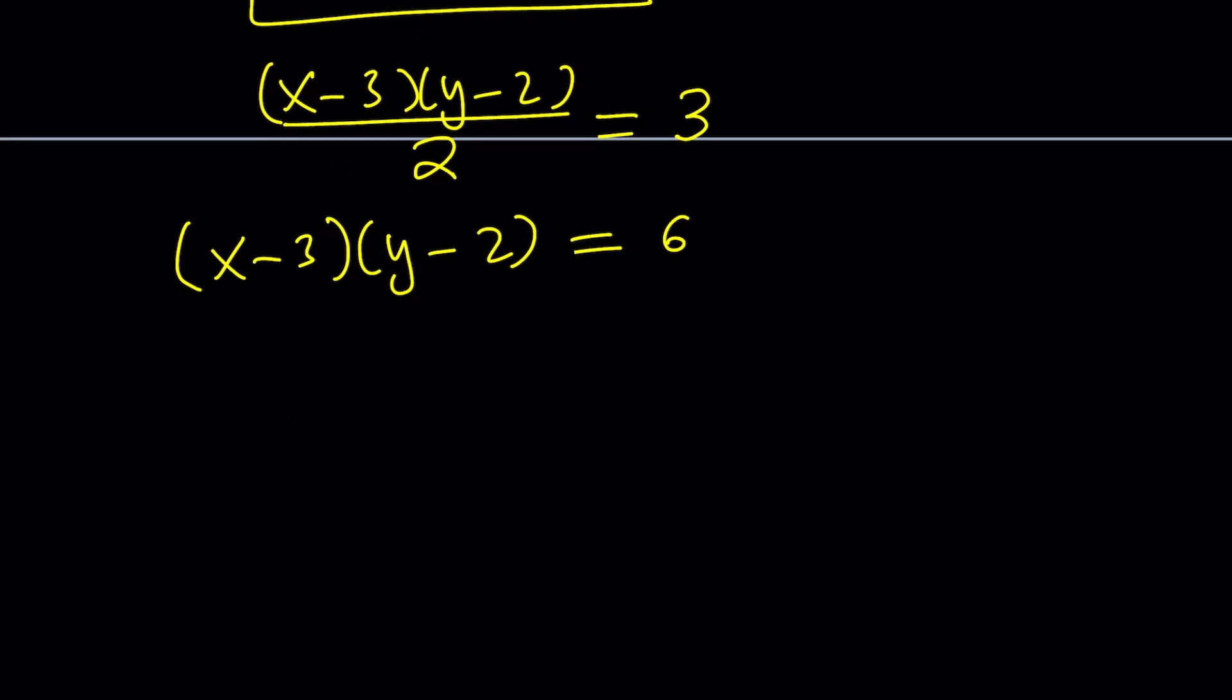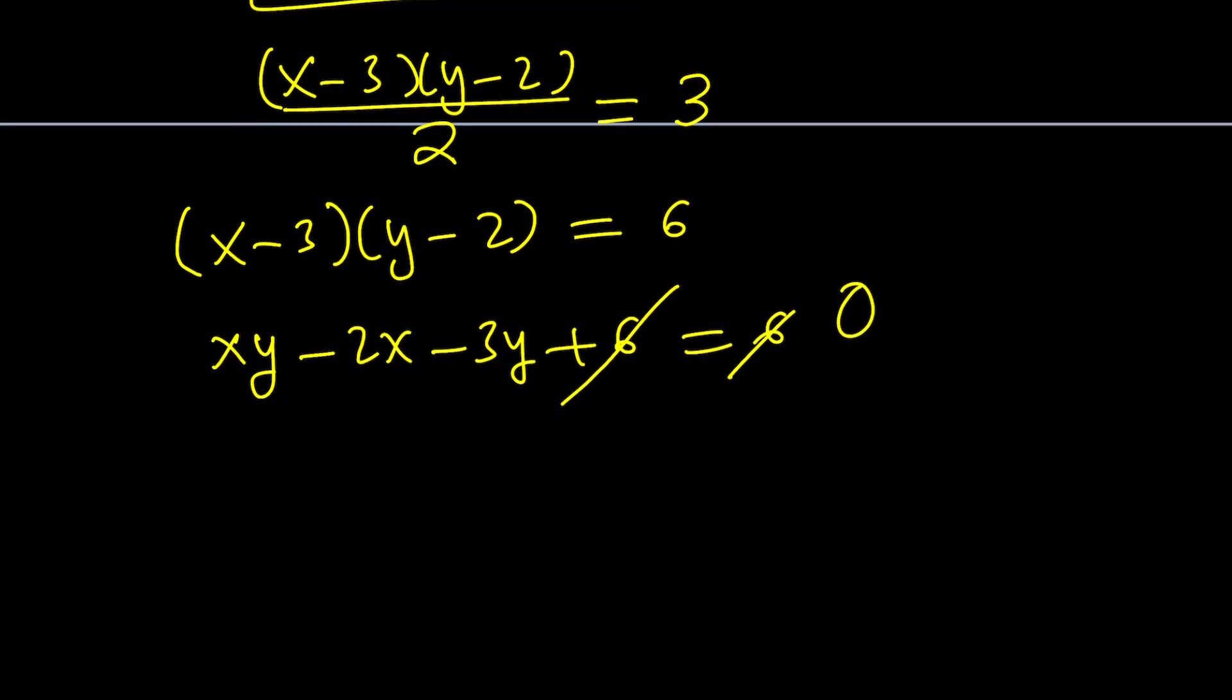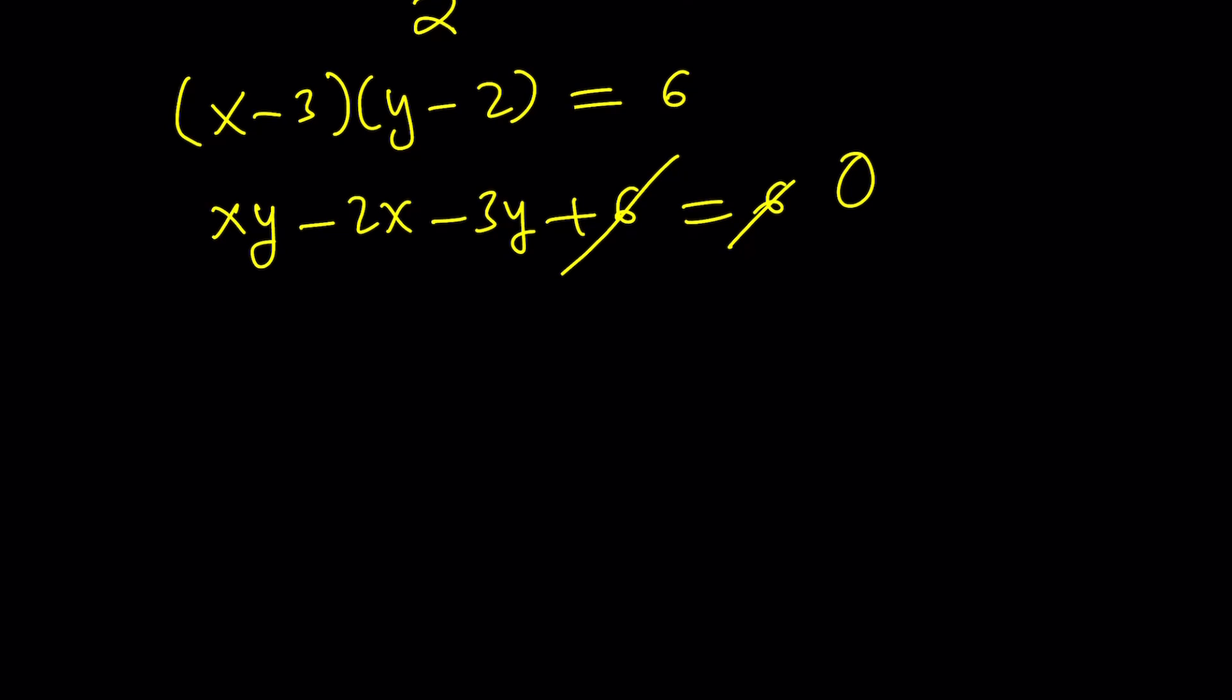And then let's go ahead and distribute on the left-hand side because we're going to get something interesting. When you distribute, you're going to get xy minus 2x minus 3y plus 6 equals 6. The 6 cancels out. We end up with 0. Now, I can go ahead and do a couple different things here. But let's isolate xy. Add 2x plus 3y. And why am I getting xy by itself? You've always got to keep in mind what you're trying to find. So 3 over x plus 2 over y is what I'm supposed to evaluate. Are we closer?